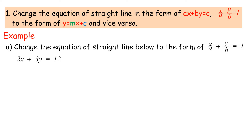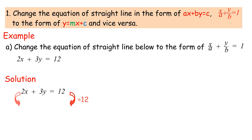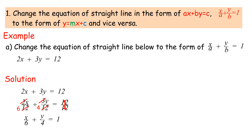Example a: Change the equation of the straight line to the form x over a plus y over b equals 1. Given 2x plus 3y equals 12. To change the right-hand side to 1, we divide both sides by 12. This gives 2x over 12 plus 3y over 12 equals 1, therefore x over 6 plus y over 4 equals 1.